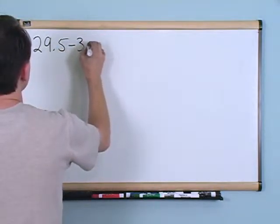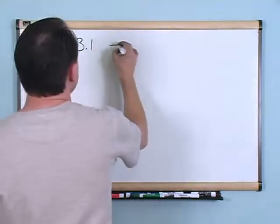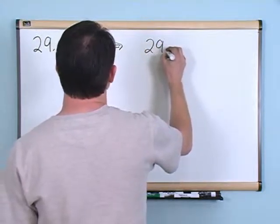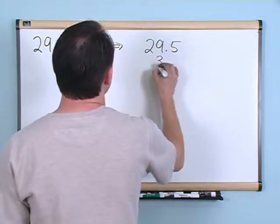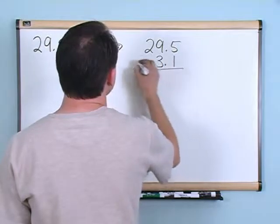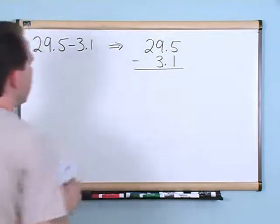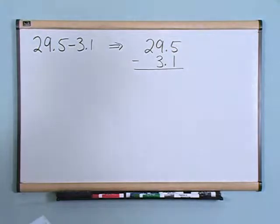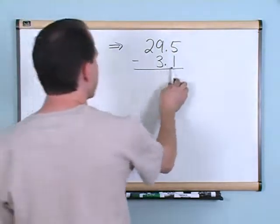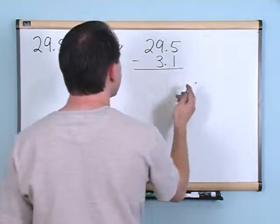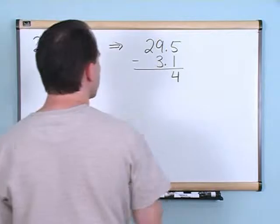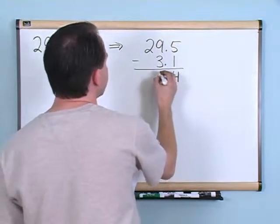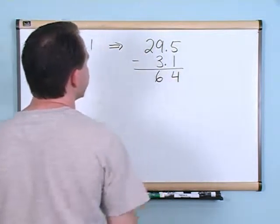The last addition and subtraction problem I'm going to do is: what if you had 29.5 minus 3.1? You would write the bigger number on top — 29.5 — and then 3.1 on the bottom, subtract them, and line these decimals up.